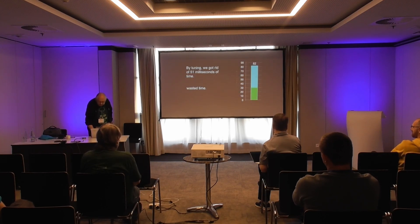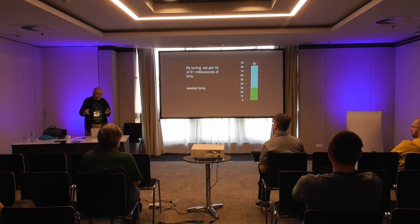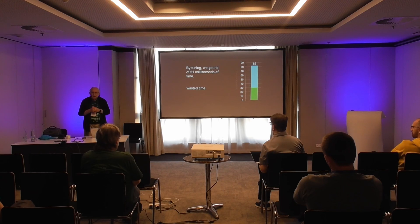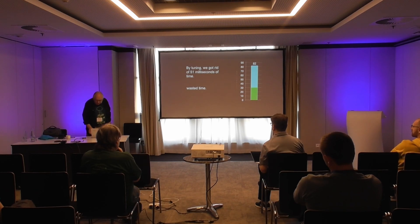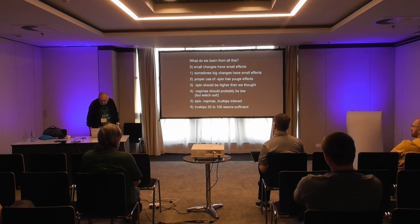By doing these various tuning operations for the latches, we can get rid of this whole 51 milliseconds of latch latency. Now what about the other kinds of locks, like record locks — how do you deal with record lock latency? The answer is complicated, but the basic thing you can do is fix your bad code. There are no tuning parameters for record lock operations.